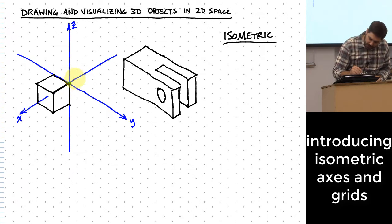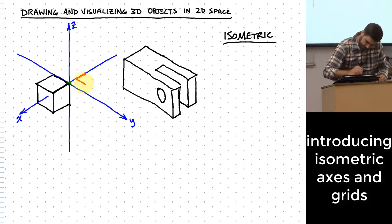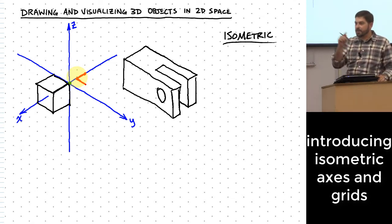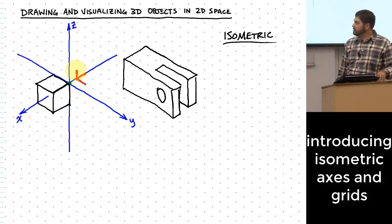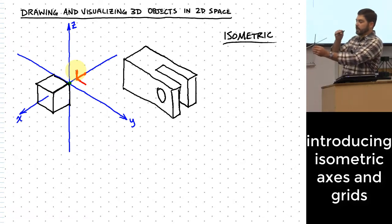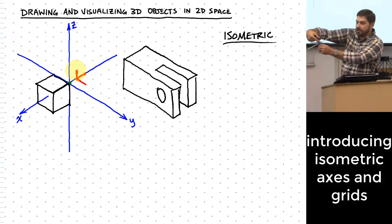Let me show you where that arises from. Look at how long the distance is from dot to dot when measuring along the X axis. Measuring along the Y axis, that distance from one dot to the next looks about the same. And measuring from dot to dot in the Z direction, it also looks about the same.